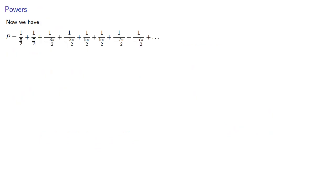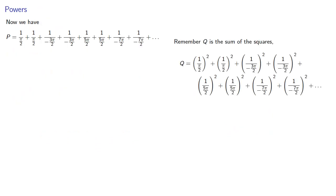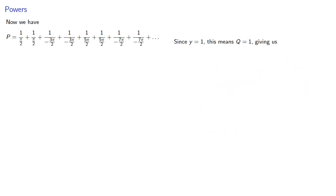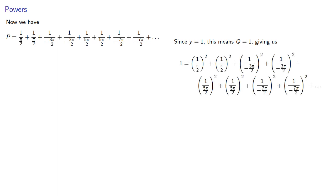So from our sum for p, remember q is the sum of the squares. Euler's formulas give us q equals 1 over y squared. Since y equals 1, this means q is equal to 1. Multiplying by pi squared over 4 and simplifying gives us pi squared over 8.